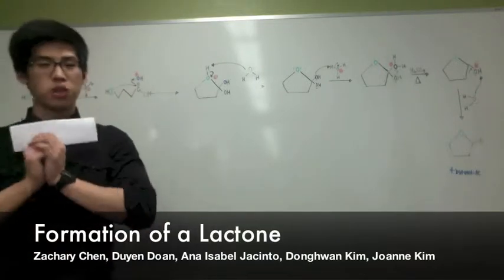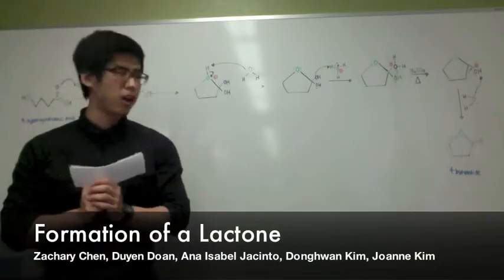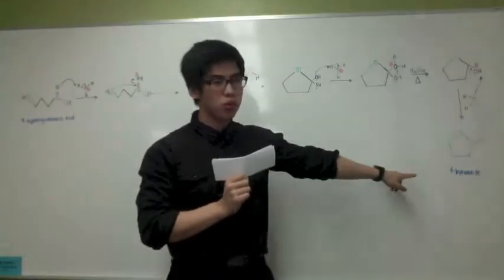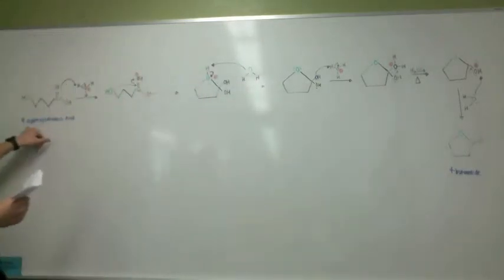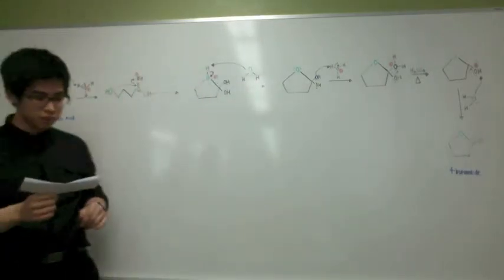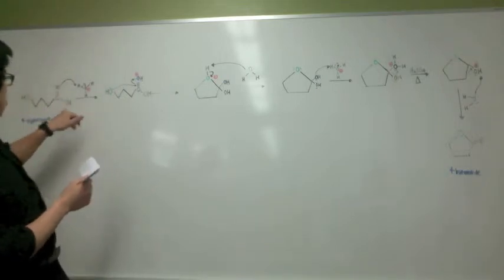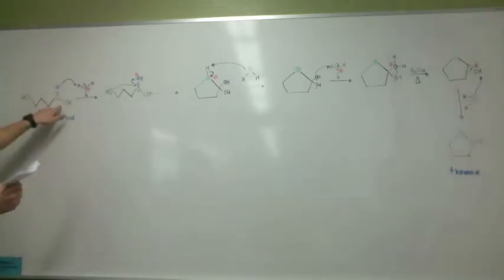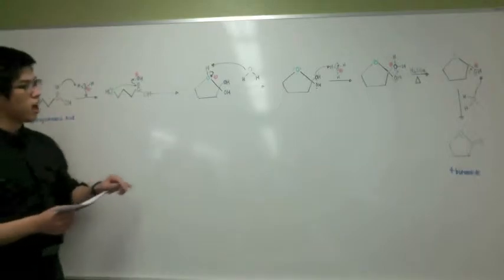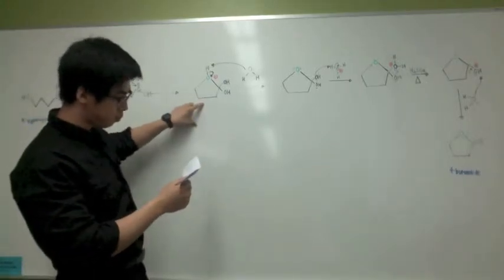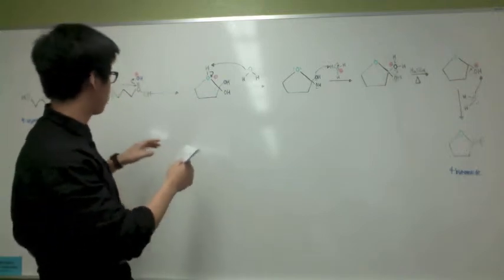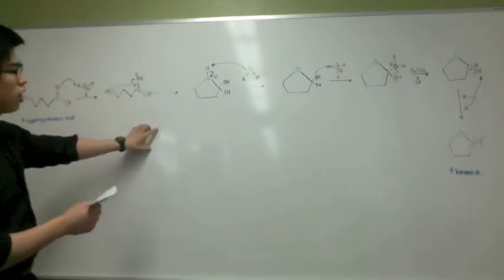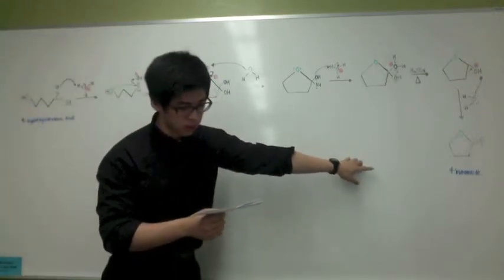Hi, I'm Dong Huan and I'm the narrator for the formation of 4-butanolide, which is a lactone from 4-hydroxybutanoic acid. Hydroxy acids, which are compounds that contain both the hydroxyl and carboxylic groups, form cyclic esters through intermolecular esterification and eventually form a lactone at the end.